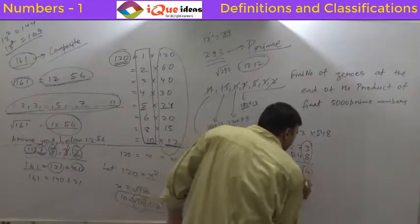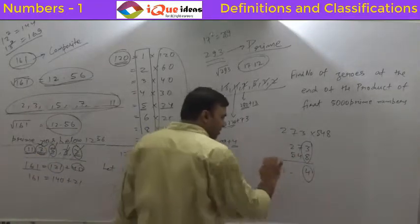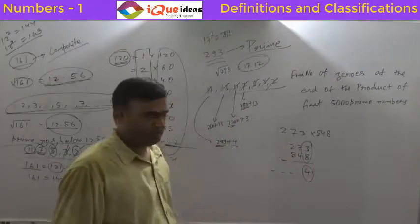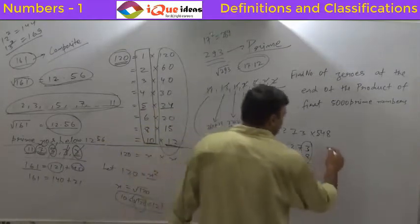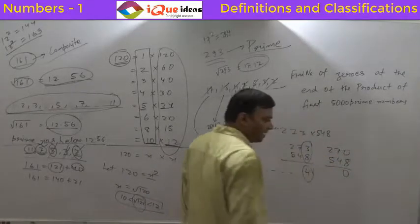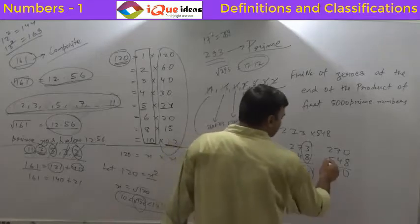Now how would you get 0 here? You may get a 0 if at these two places, if any one of them has a 0 here, you will get a 0. Like 270 into 548 - obviously it will come 0, it will have a 0 in the end, the product will have 0 in the end.